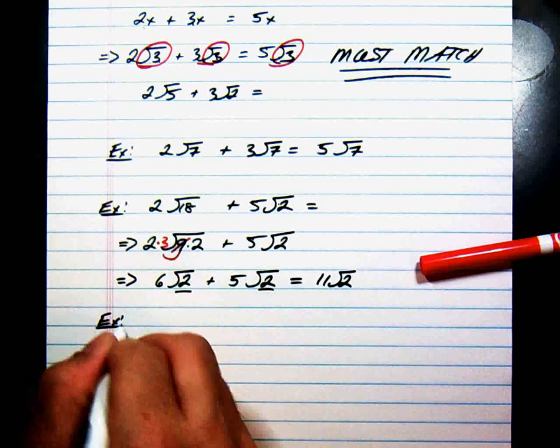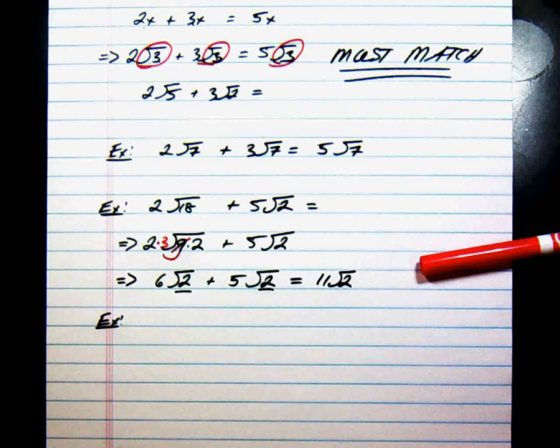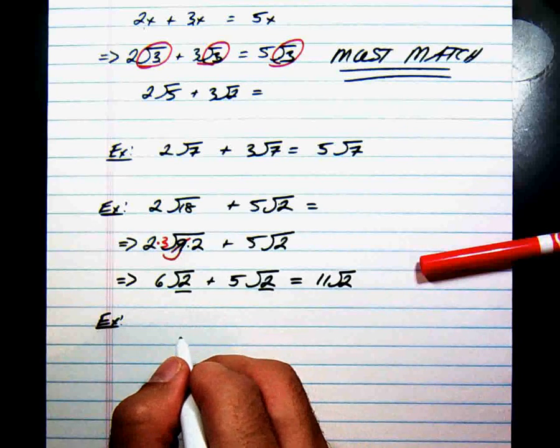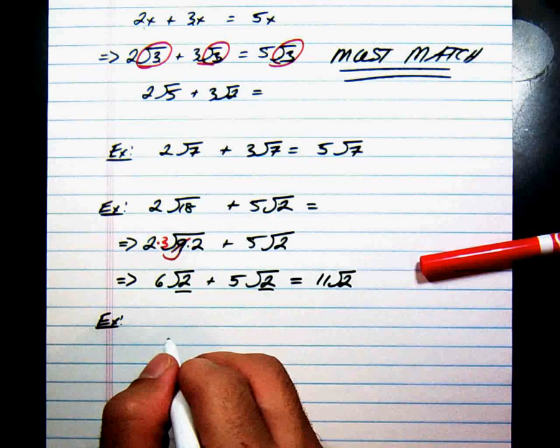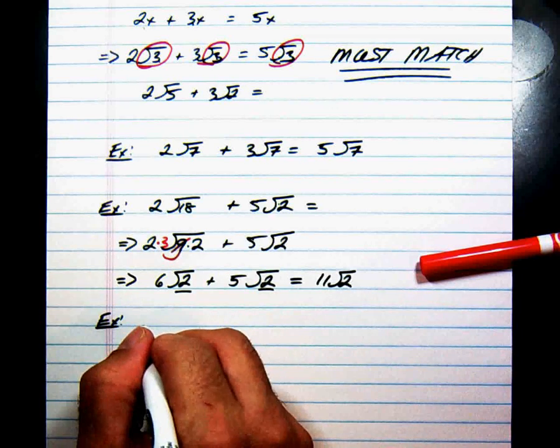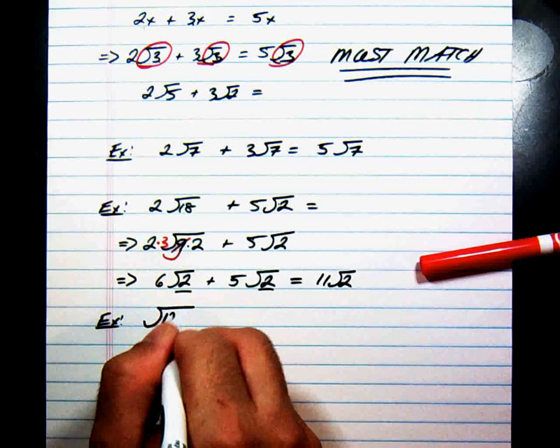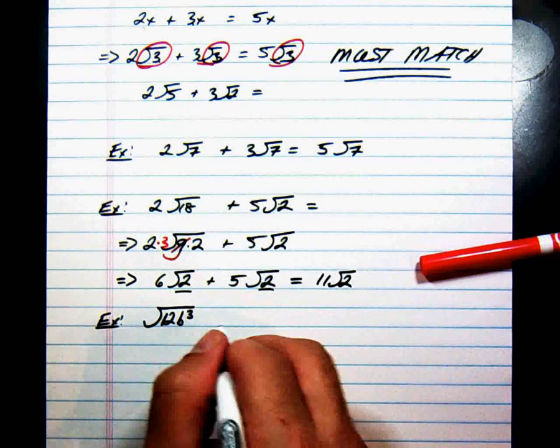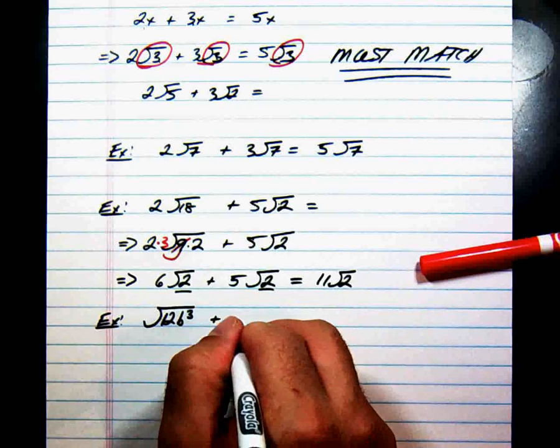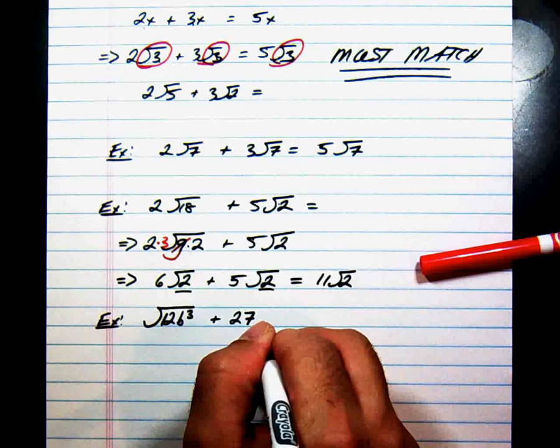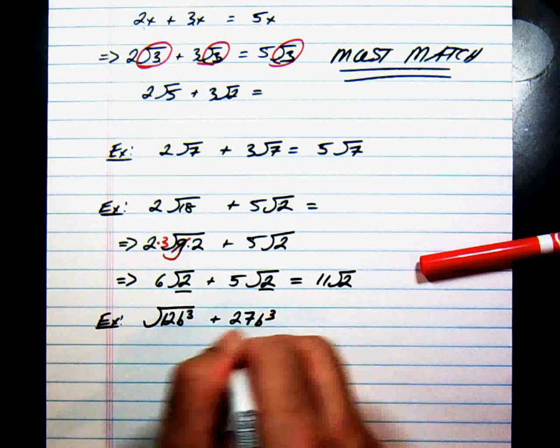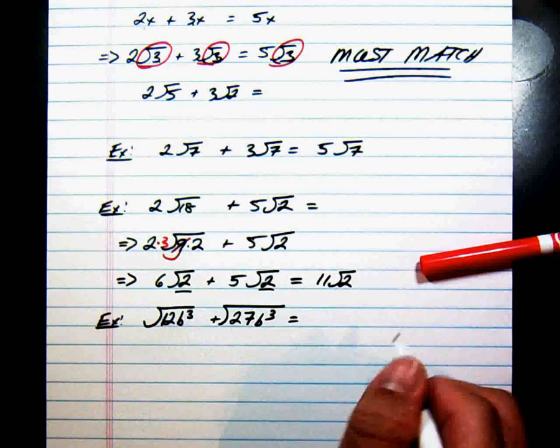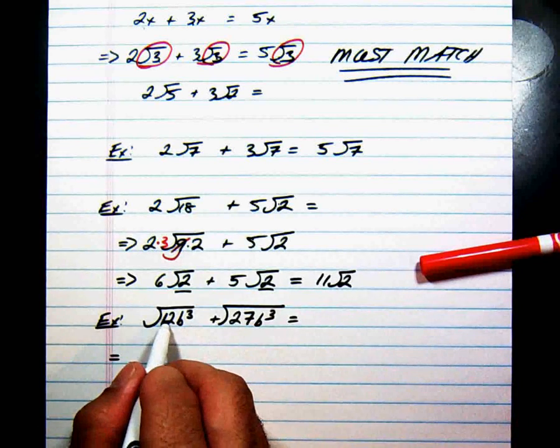Let's say we have 12b cubed plus 27b cubed, all underneath your radical. And we want to know what this equals. Well, go ahead and break it up. Don't be shy. 12 is 4 times 3. Okay. There's your perfect square factor there.